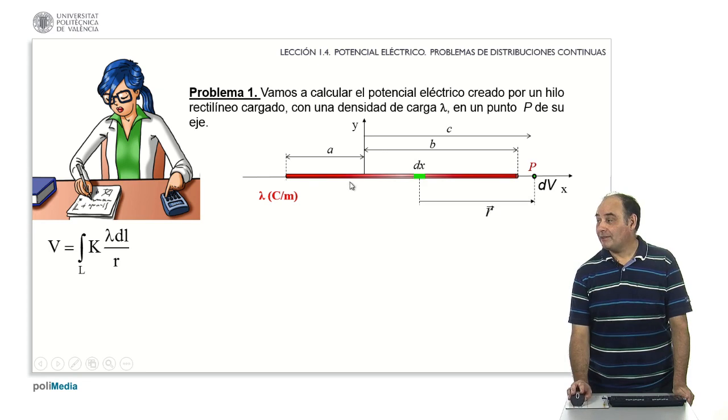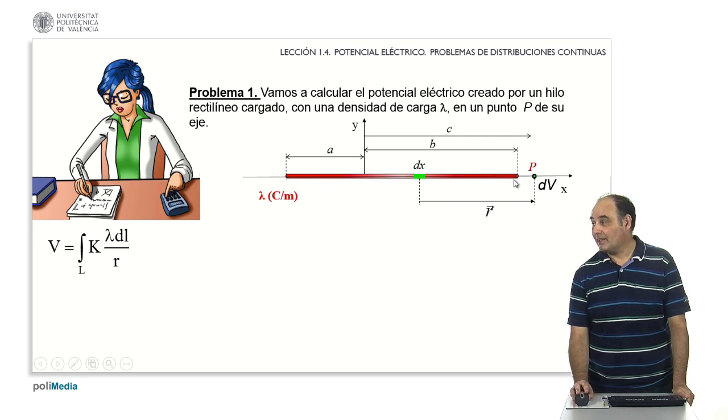For this, we have to divide the bar into infinitesimal segments. There would be a pile up to here and another pile up to there, and each is so small that it is practically punctual.